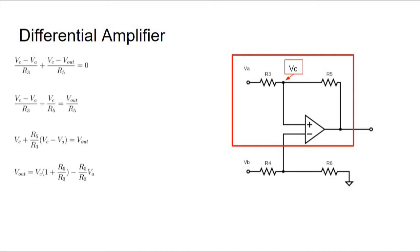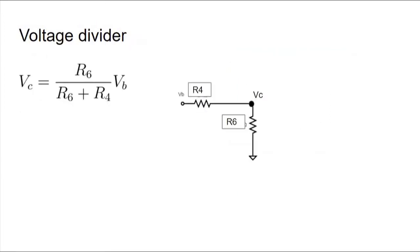Now we just need to find Vc. Remember, the positive and negative terminal voltages of the op-amps are equal, so Vc is really the voltage here. Looking closely at this part of the circuit shows us a simple and sneaky circuit, a voltage divider. Taking away the op-amp and zooming into the lower part, our equation turns out to be Vc equals R6 divided by R6 plus R4 times Vb. Now we can plug this into our previous equation.